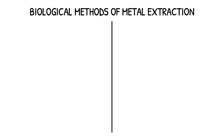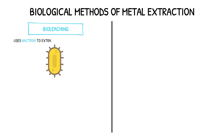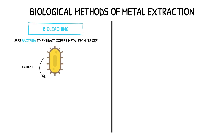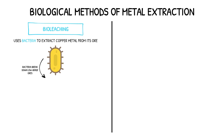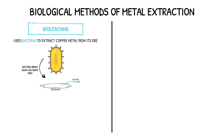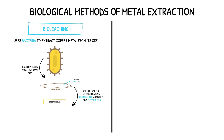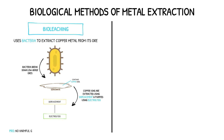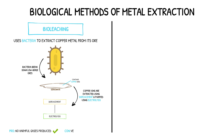Alternative methods of metal extraction use living organisms to extract metals from their ores. The first of these is called bioleaching, and it uses bacteria to extract copper metal from its ore. The bacteria break down low-grade ores and produce an acidic solution called leachate. The leachate contains copper ions which are then extracted using displacement and purified via electrolysis. The process does not release any harmful gases into the atmosphere, however it is very slow and may release toxic substances that can damage the environment.